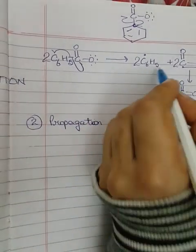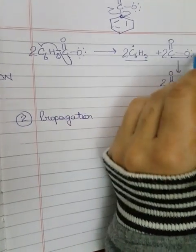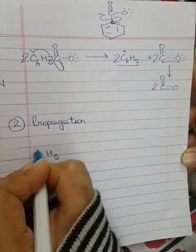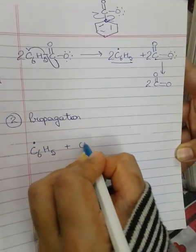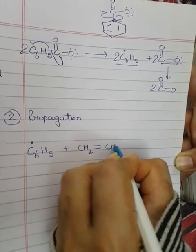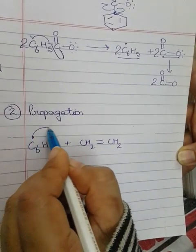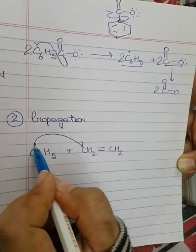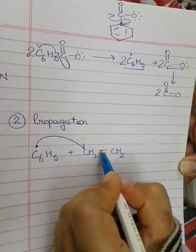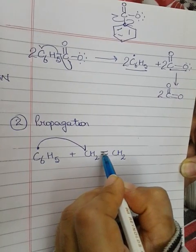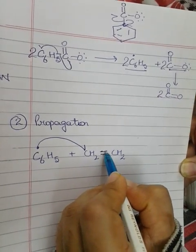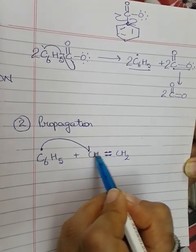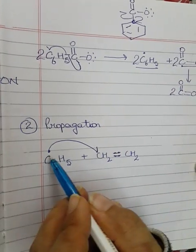Now we move to second step, propagation. In propagation we are taking this radical because there is no other radical left. C6H5 radical, it will attack on ethene. Now one electron is attacking on this carbon. We have to show with half arrow because it is only one electron.